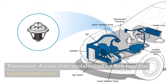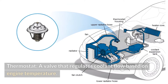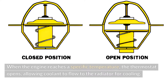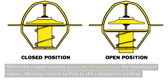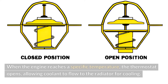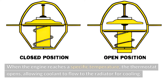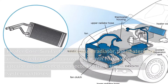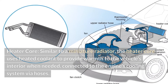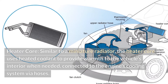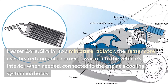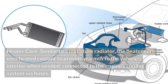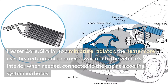Thermostat: A valve that regulates coolant flow based on engine temperature. When the engine reaches a specific temperature, the thermostat opens, allowing coolant to flow to the radiator for cooling. Heater core: Similar to a miniature radiator, the heater core uses heated coolant to provide warmth to the vehicle's interior when needed.